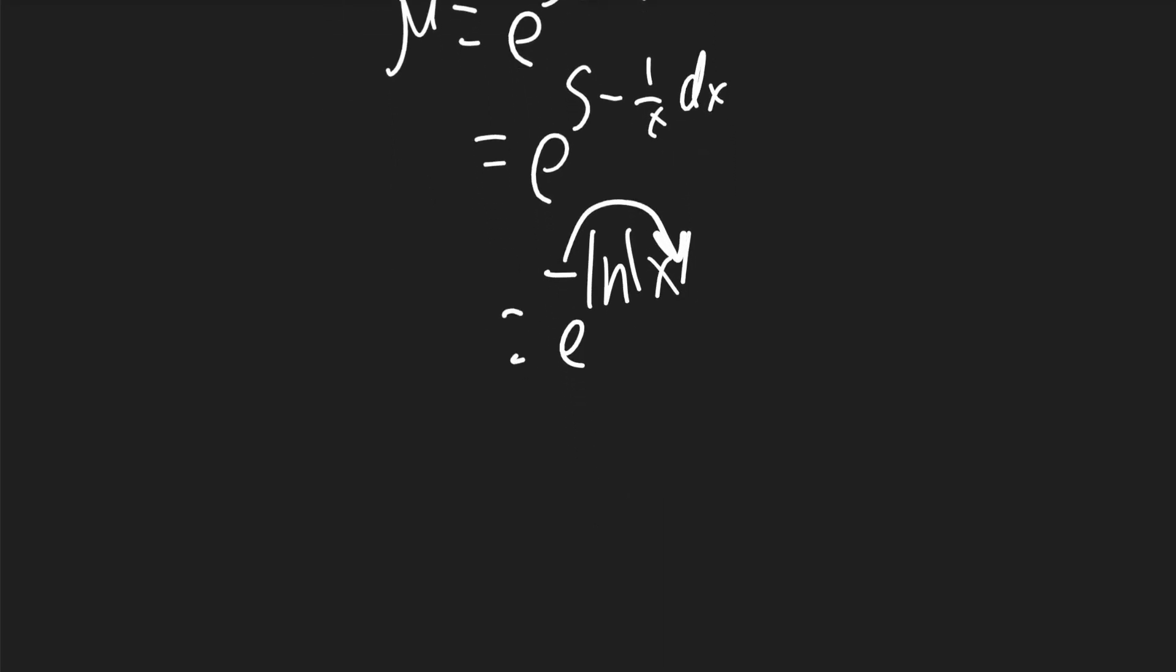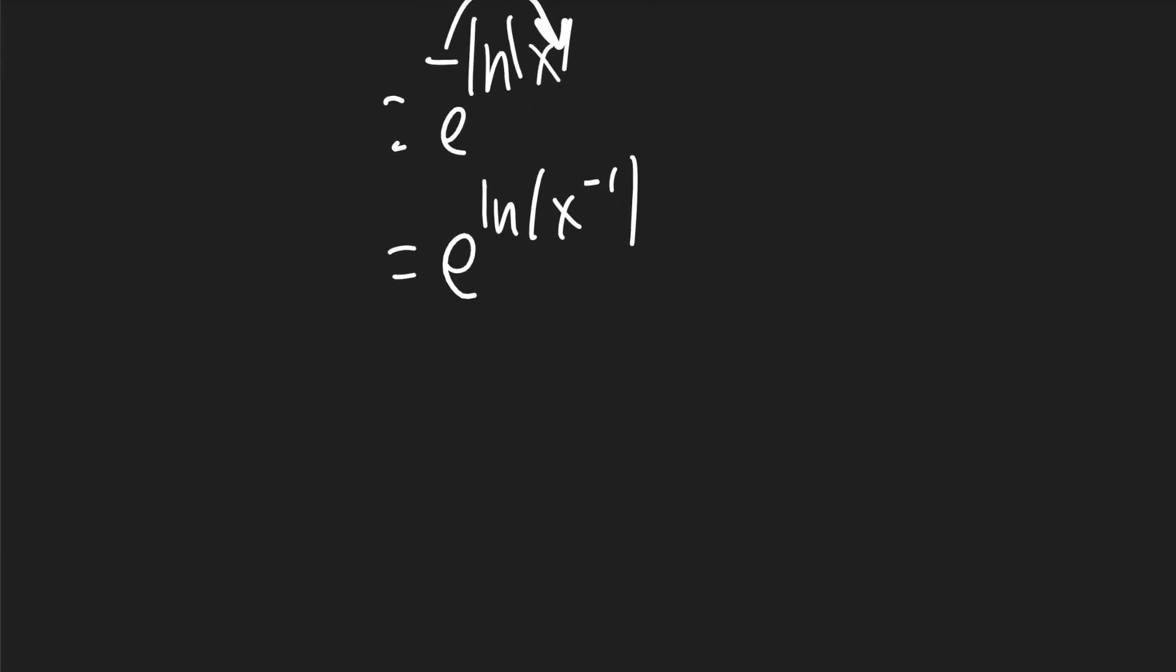That negative can jump to the exponent for the x. So it'll be e to the ln of x to the negative 1. The e and the ln will cancel. So mu will be equal to x to the negative 1, which is 1 over x.